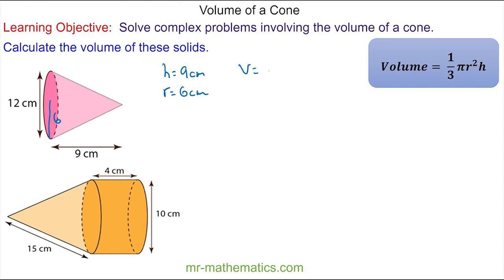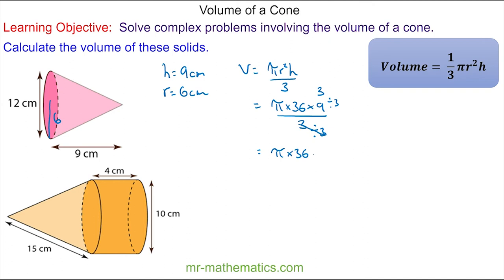The volume is πr² × height divided by 3. With radius 6cm, this gives π × 36 × 9 over 3. We simplify by dividing both by 3, giving π × 36 × 3 = 108π cm³. As a decimal, this is approximately 339 cm³ to 3 significant figures.